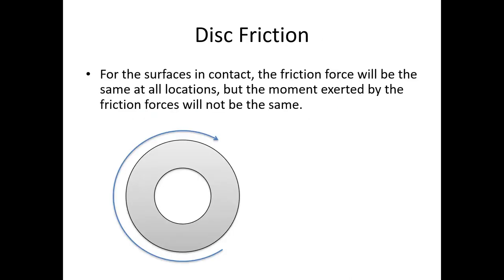For the surfaces in contact, like the collar where we have a hollow circular area, the friction is going to be the same at all locations but the moment exerted by the friction force is not going to be the same. The friction force is μk times FN. If the normal force is evenly spread out, the friction force on the inside and outside of this collar is going to be the same. But the moment is not going to be the same because the moment is force times distance, and it's farther to the outside of the collar than to the inside.